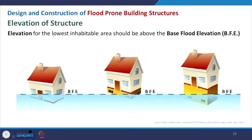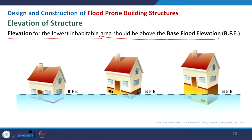Coming to elevation of structure: the elevation for the lowest inhabitable area should be above the Base Flood Elevation (BFE). If your building is at ground level with no plinth, it is not advisable. If the plinth is just at the base flood elevation, it is somewhat better — but when the level rises with continuous rain, it will go above that. So you should make your structure quite above the BFE.